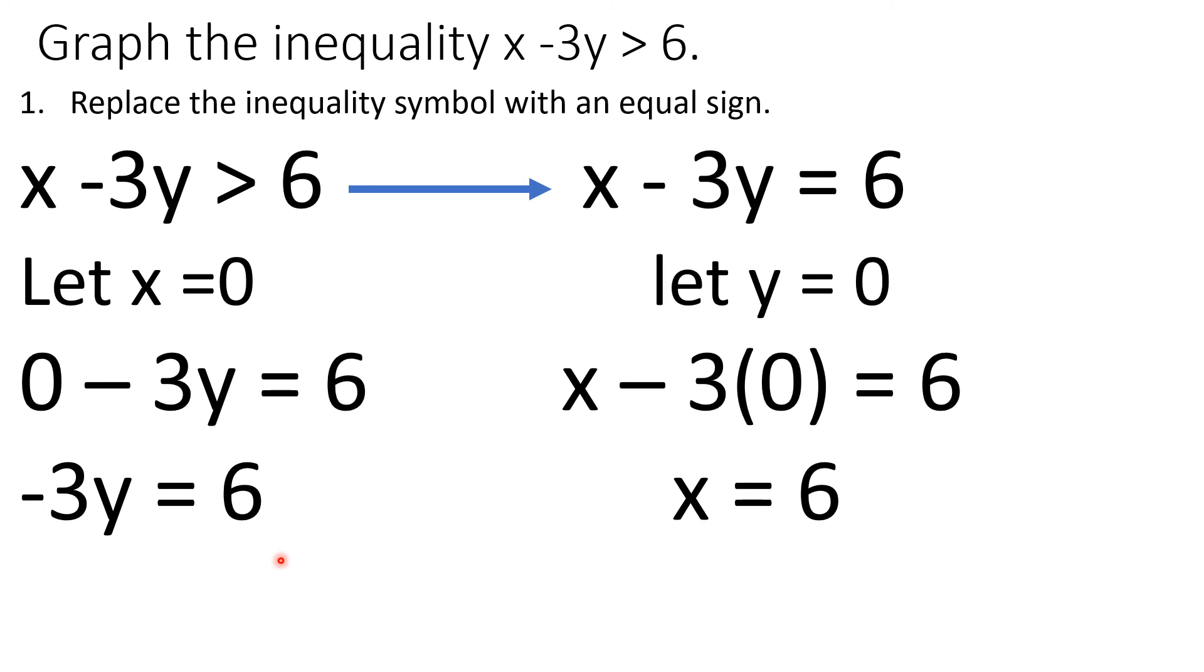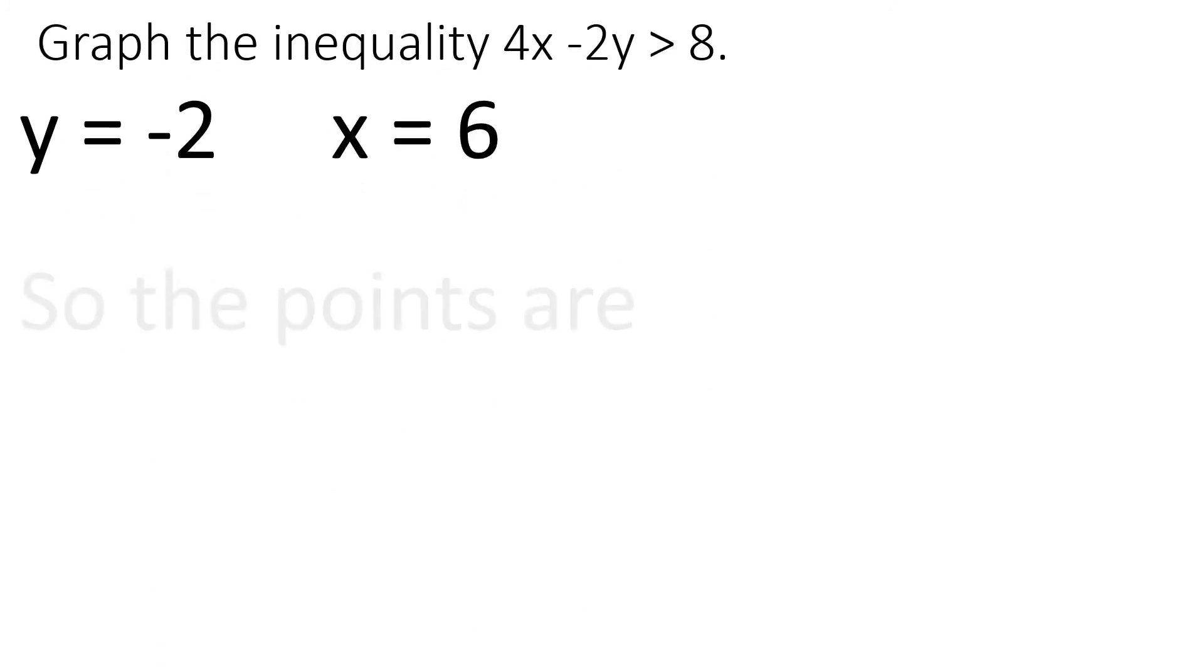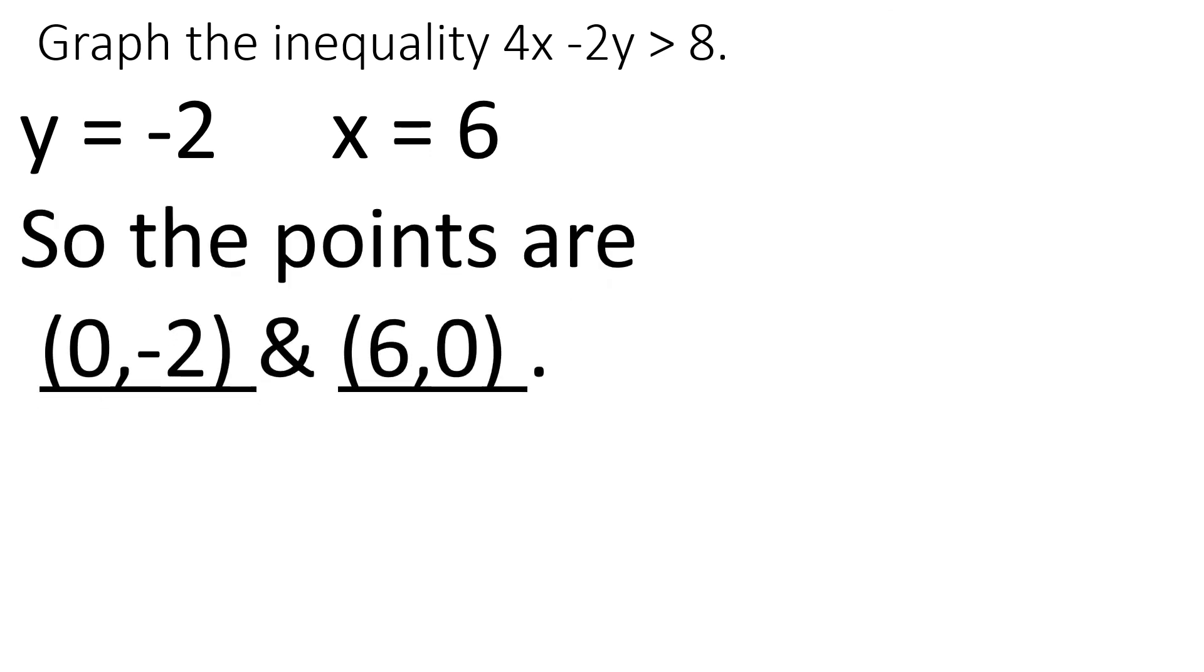So negative 3y equals 6. Negative 3y divided by 3 divided by 3, y is negative 2. X is 6. So what are our points now? If x is 0, y is negative 2. If x is 6, y is 0.